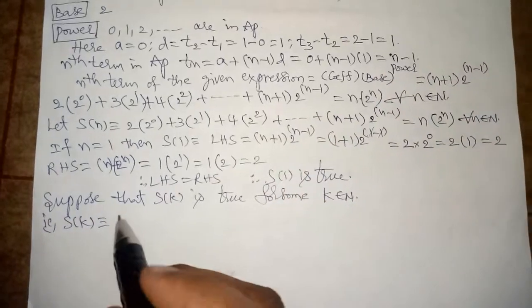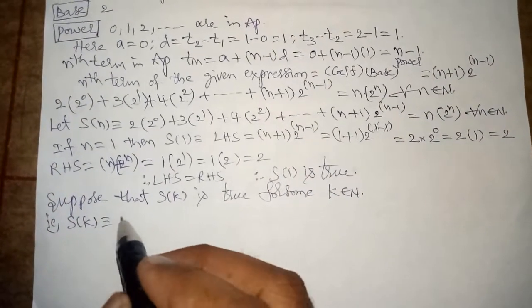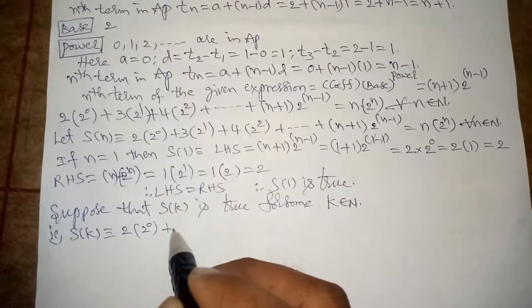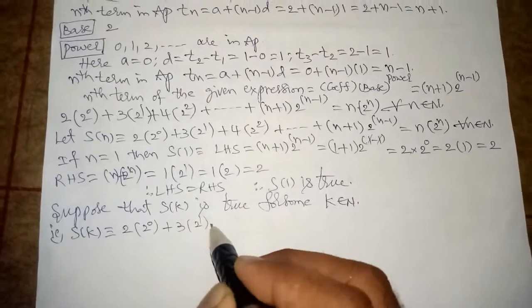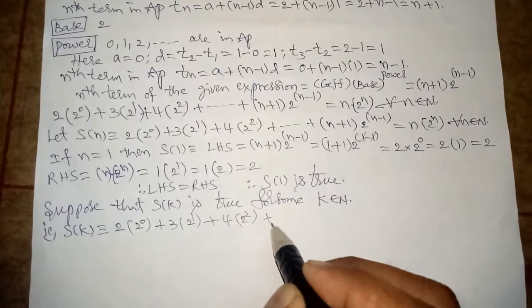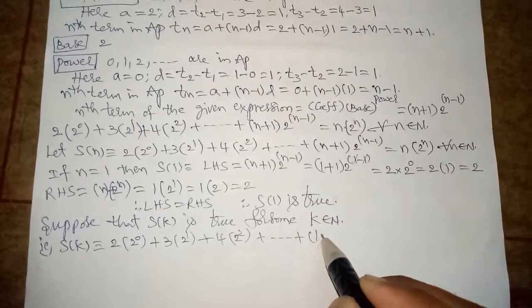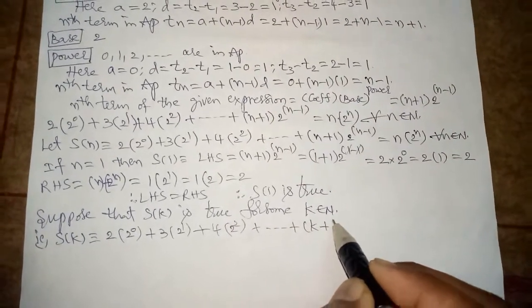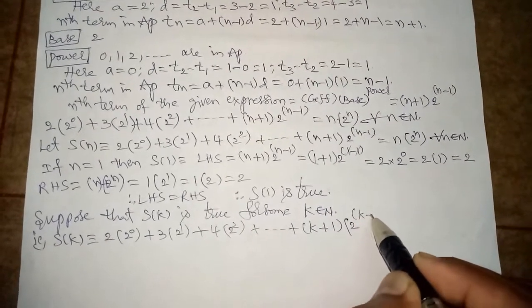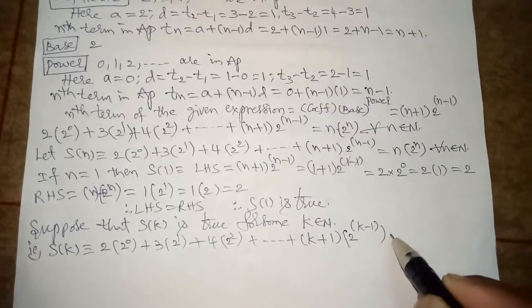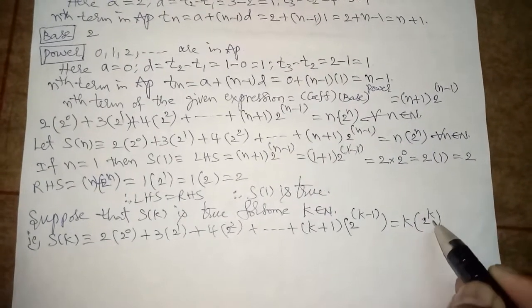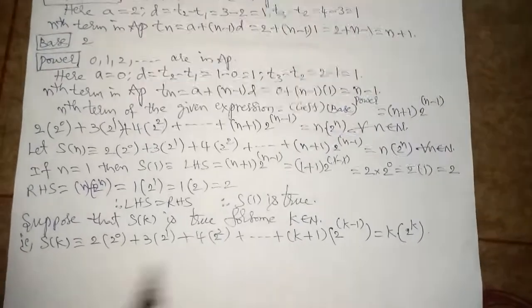Step: assume n equals k. We get 2 into 2 power 0 plus 3 into 2 power 1 plus 4 into 2 power 2 plus and so on plus (k plus 1) into 2 power (k minus 1), equals k into 2 power k. This is S(k).